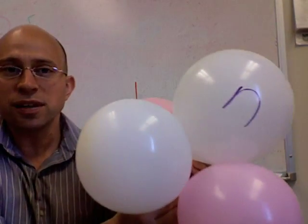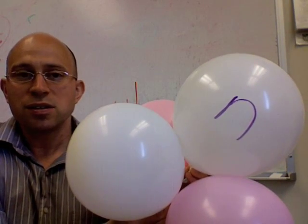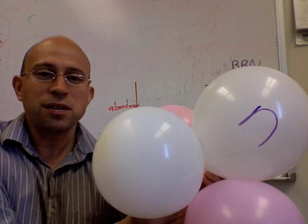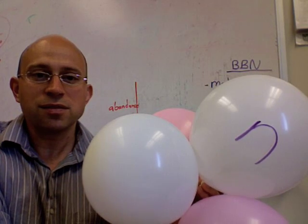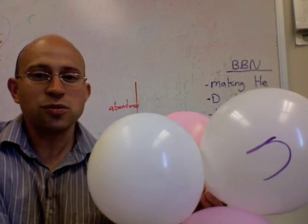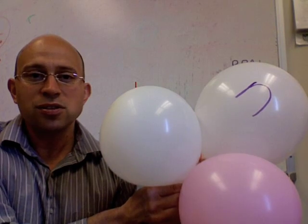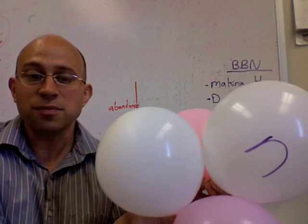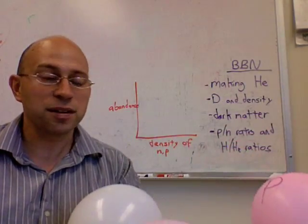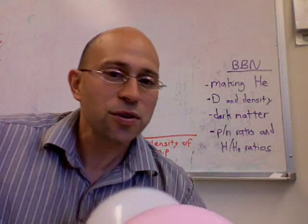This is sort of a natural end state because to build up anything bigger than helium-4 you need to get two helium-4s together. That's hard to do because each have twice the charge of a proton, so it's four times as hard to get them together because of the electromagnetic repulsion.